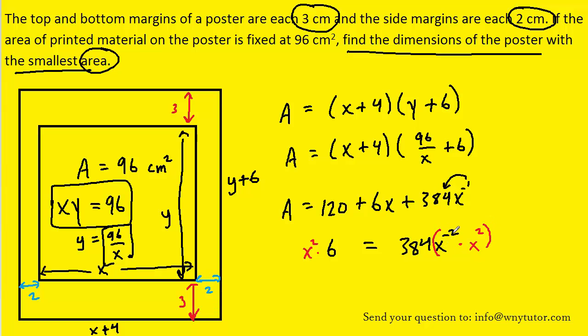Remember, x to the negative 2 times x to the positive 2 would be x to the 0, because you just add the exponents together. x to the 0 is just a 1, so it basically cancels out. So that will go away. At this point, it should be relatively easy to solve for x. You can divide both sides by 6. And then if you square root both sides, we have x equals 8.